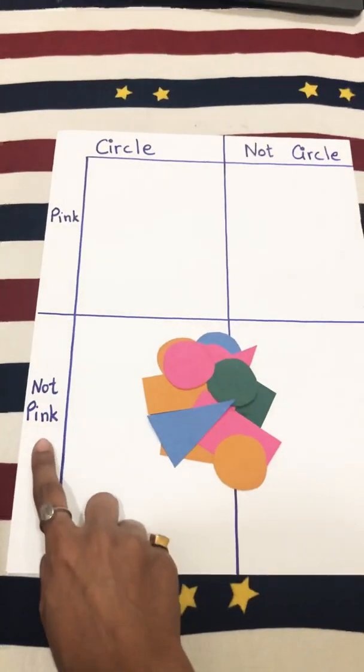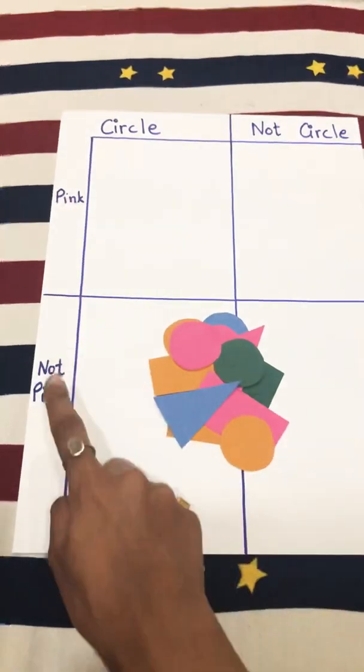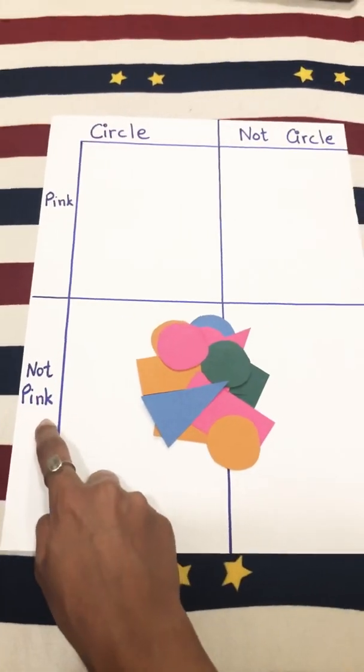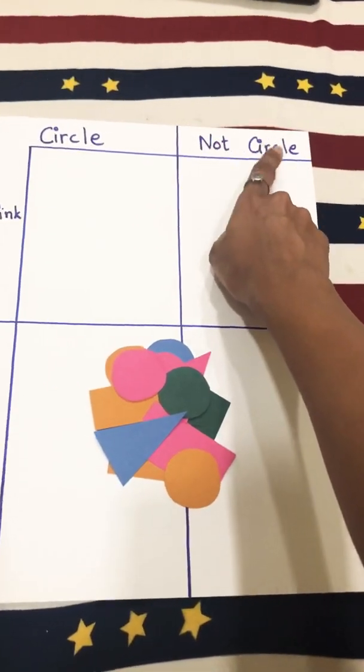The other headings will be written as follows: if the first one, the color, is pink, the other heading will be 'not pink.' If the shape I have chosen is circle, the other heading will be 'not circle.'